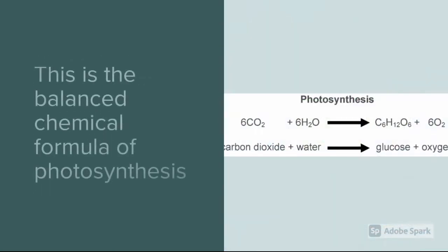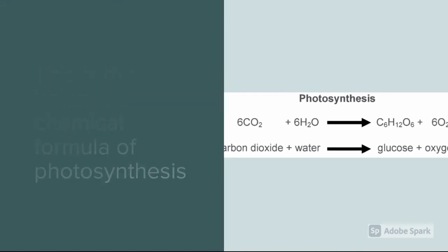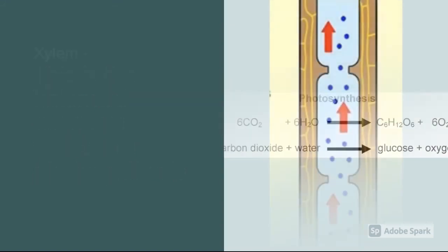This is the balanced chemical formula of photosynthesis: CO2 plus H2O gives C6H12O6 plus O2. In words, carbon dioxide plus water gives glucose and oxygen.